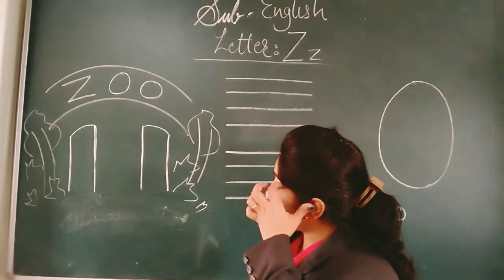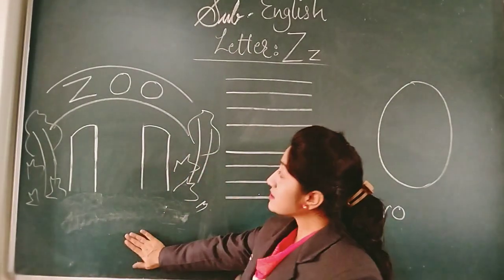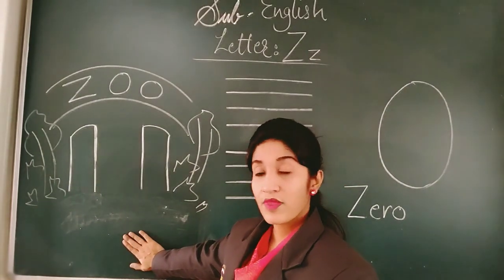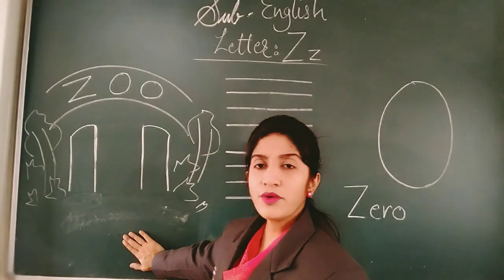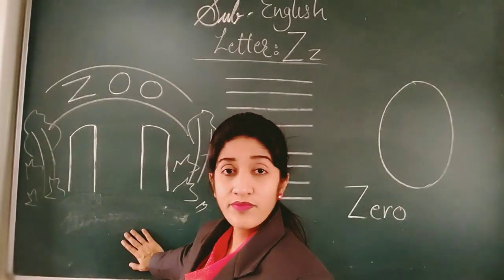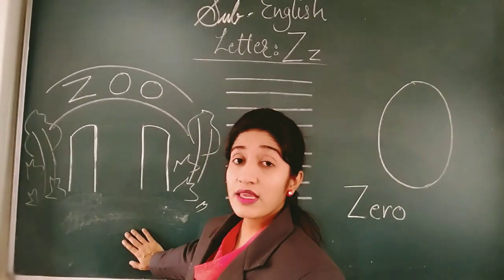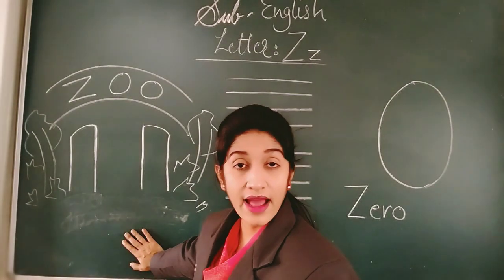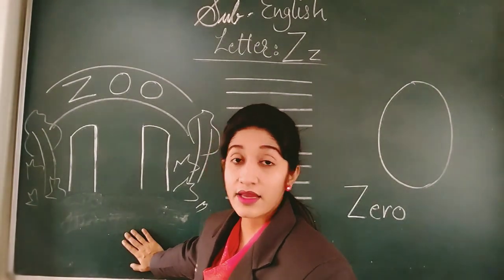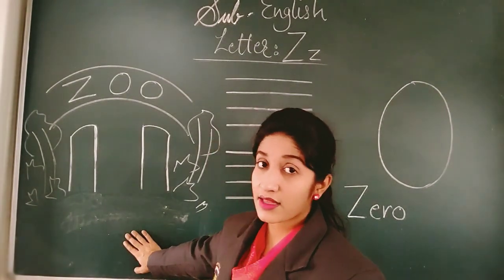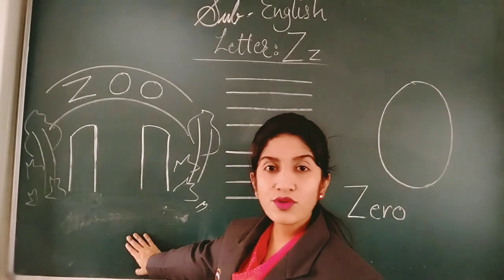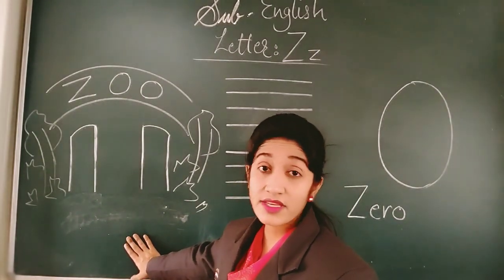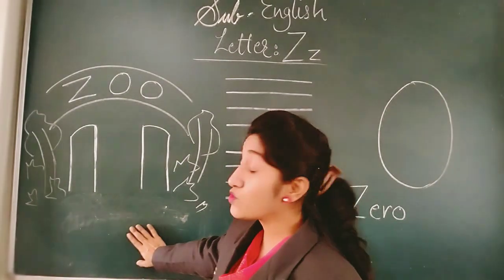So my dear children, now what is this? This is Z for Zoo. What do we see in the zoo? Hum zoo mein kya dekhte hain? Hum zoo mein different type ke animals dekhte hain, birds dekhte hain. Aur bachyo, zoo mein jana koi shayad unki one of favorite chise hain.